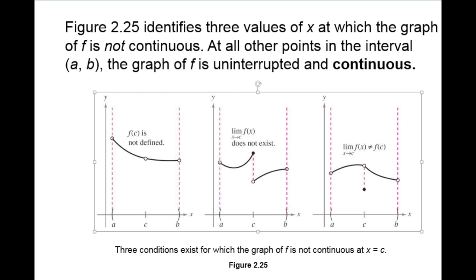First of all, you can see in Figure 2.25, it identifies three values of x at which the graph is not continuous. So as long as there aren't any of these, then our function should be continuous. At all other points in the interval (a, b), the graph of f is uninterrupted and continuous. So let's look.